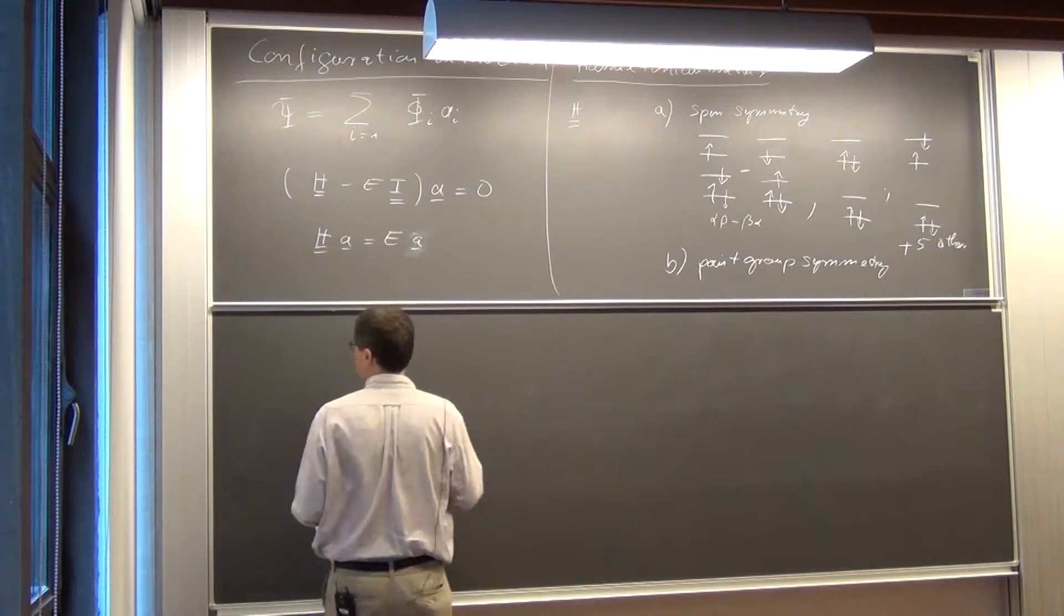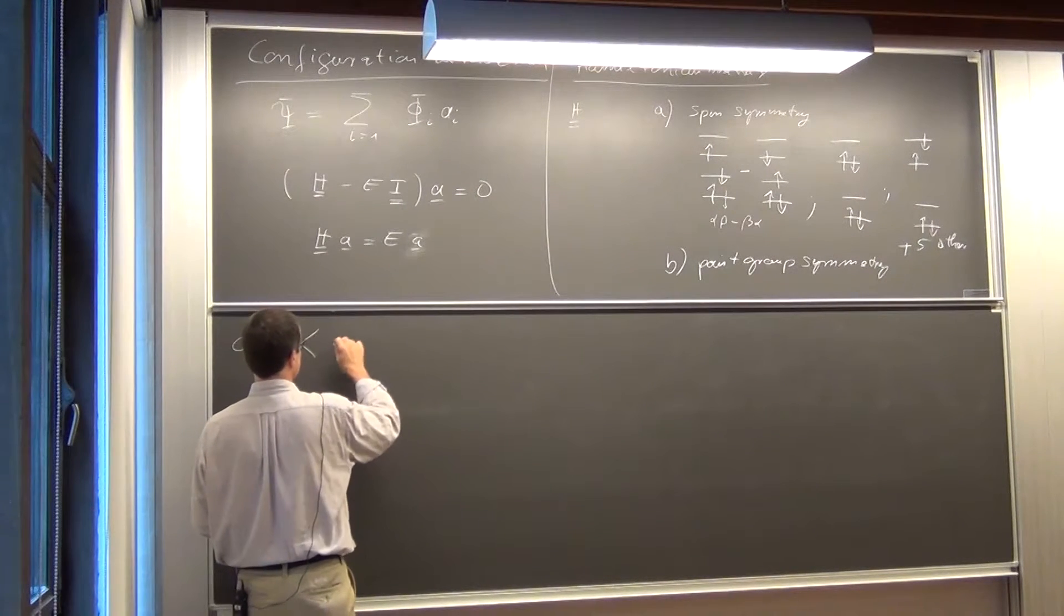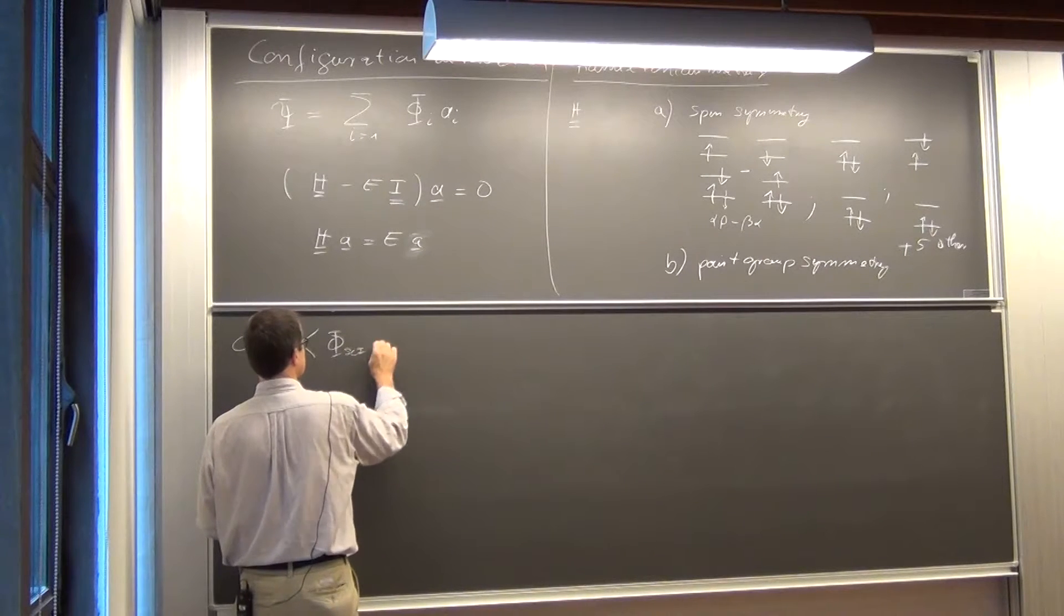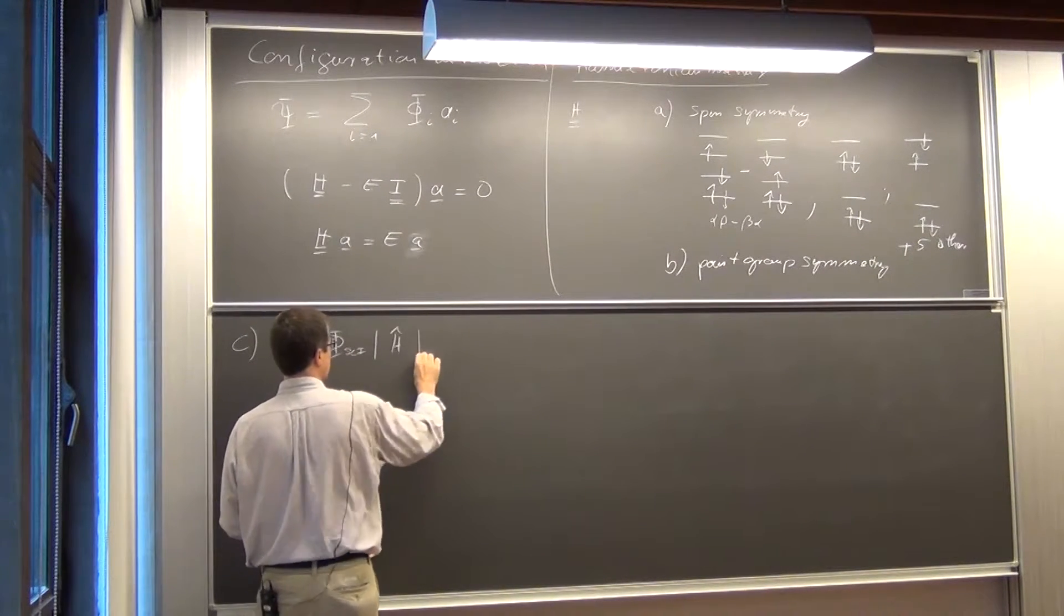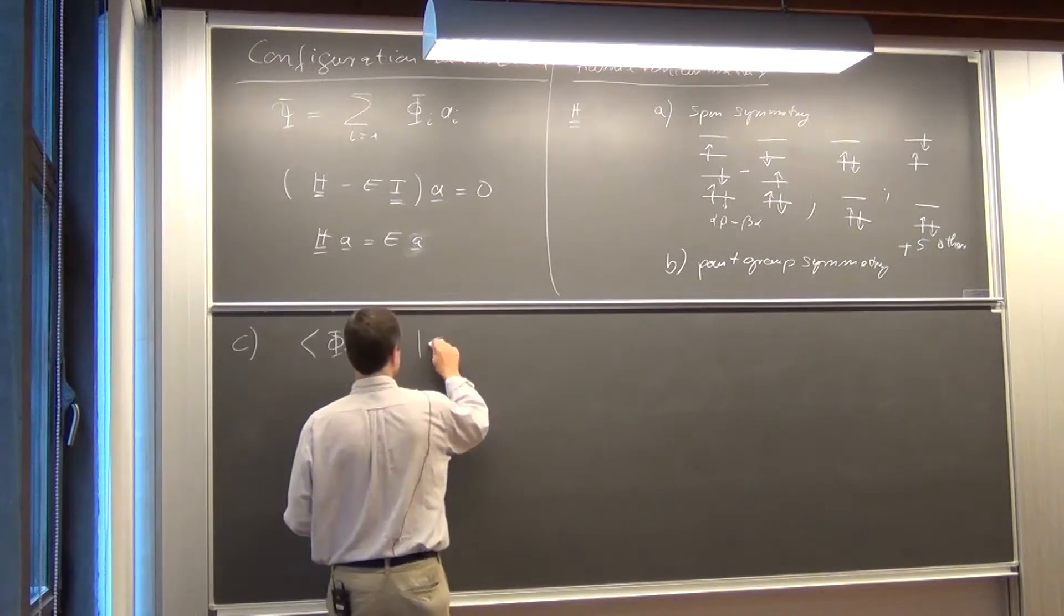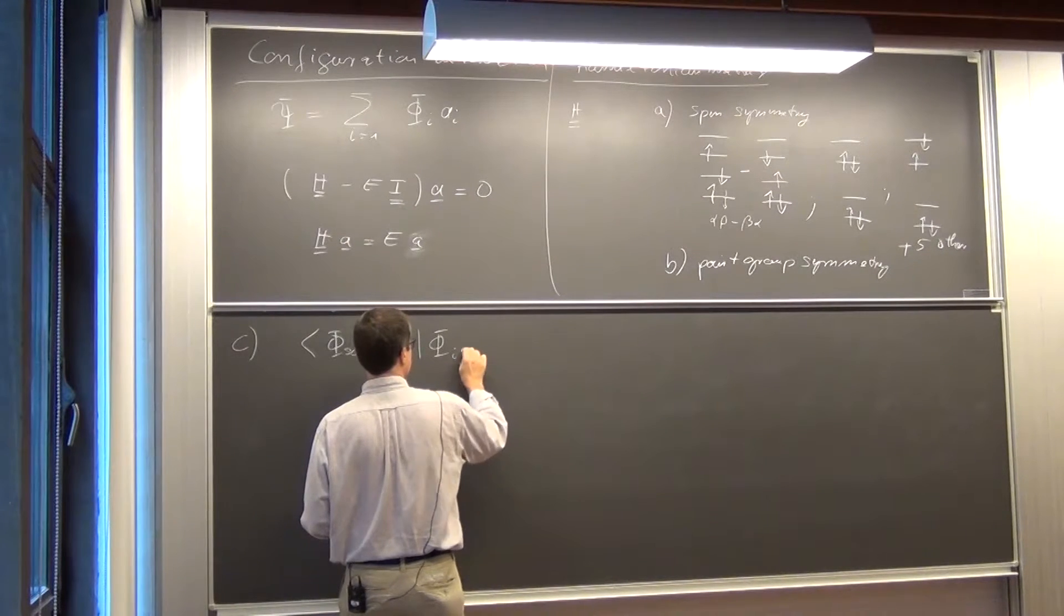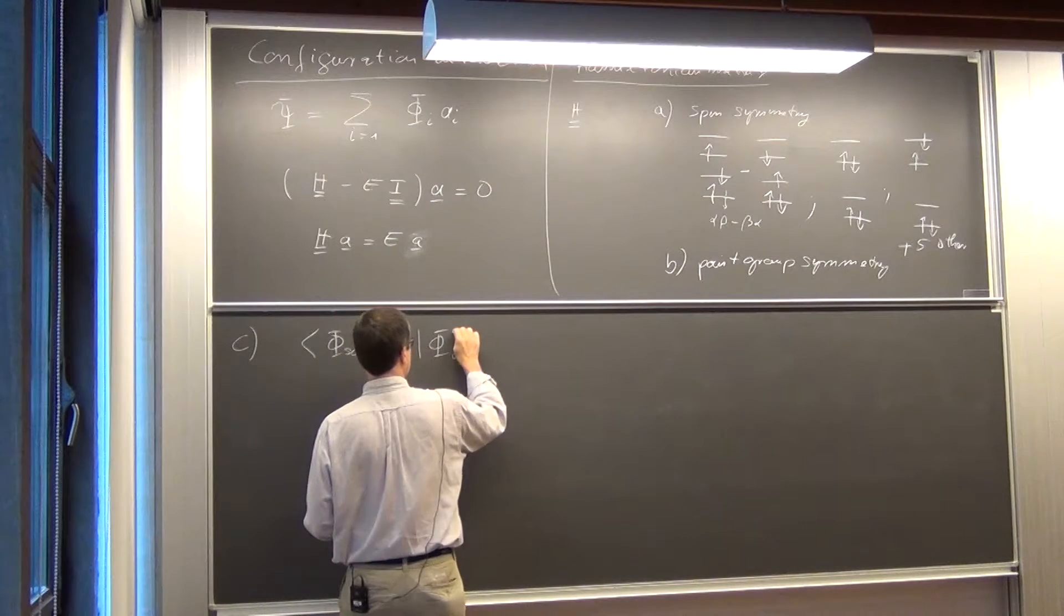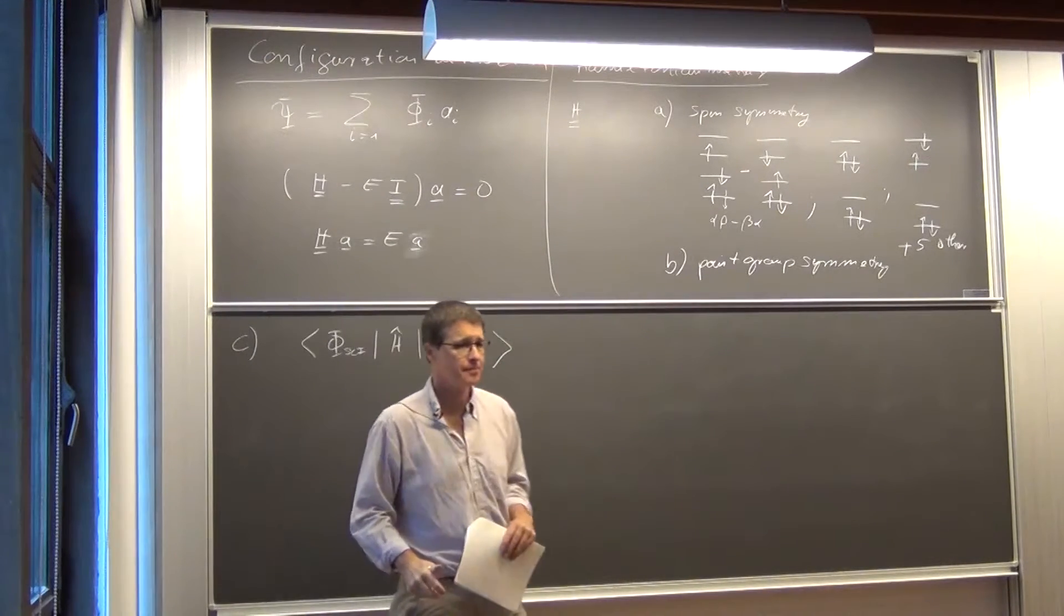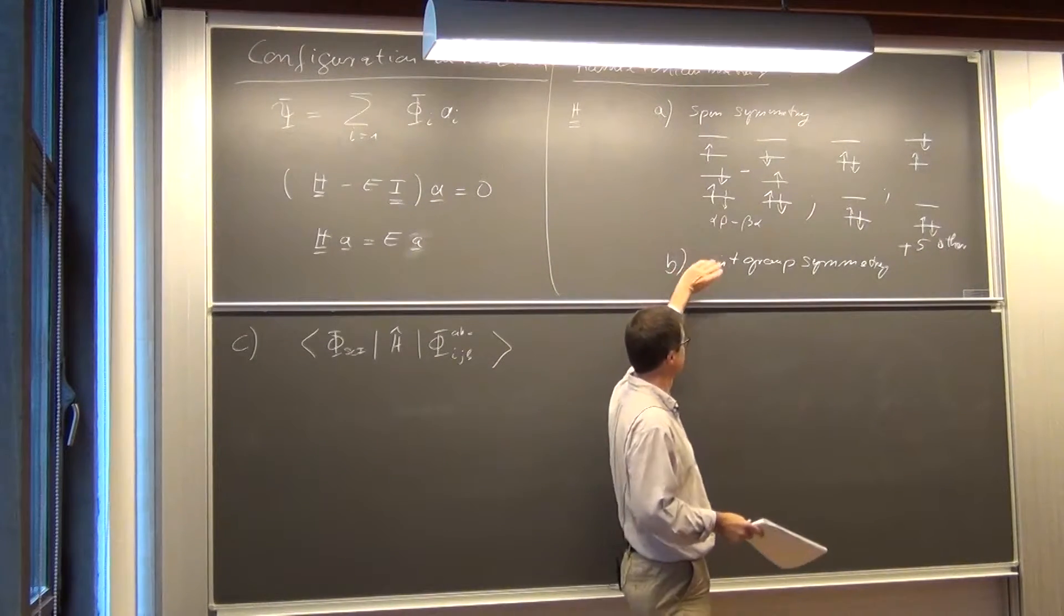The other two options are then simply, if you have some kind of a matrix element where you, let's say we have the SCF determinant here. We have our Hamiltonian with the one and two electron terms. And we have some kind I, J, K, A, B, C excited determinant.